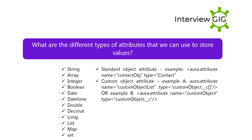What are the different types of attributes we can use to store values? String, Array, Integer, Boolean, Date, DateTime, Double, Decimal, Long, List, Map, Set. Standard Object attribute example: <aura:attribute name="contactObject" type="Contact" />. Custom Object attribute example: <aura:attribute name="customObjectList" type="CustomObject__c" />.